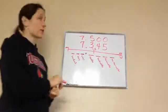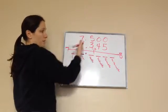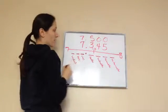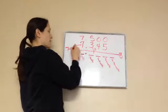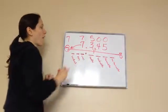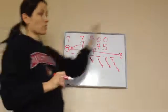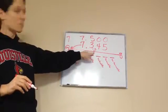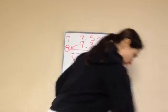Seven point five, or seven point five zero zero — remember the terminal zeros don't matter. So where would seven point three four five fall — closer to seven or closer to eight? It's closer to seven, so the answer is seven. It did not pass the seven point five halfway mark, so we round down to seven.